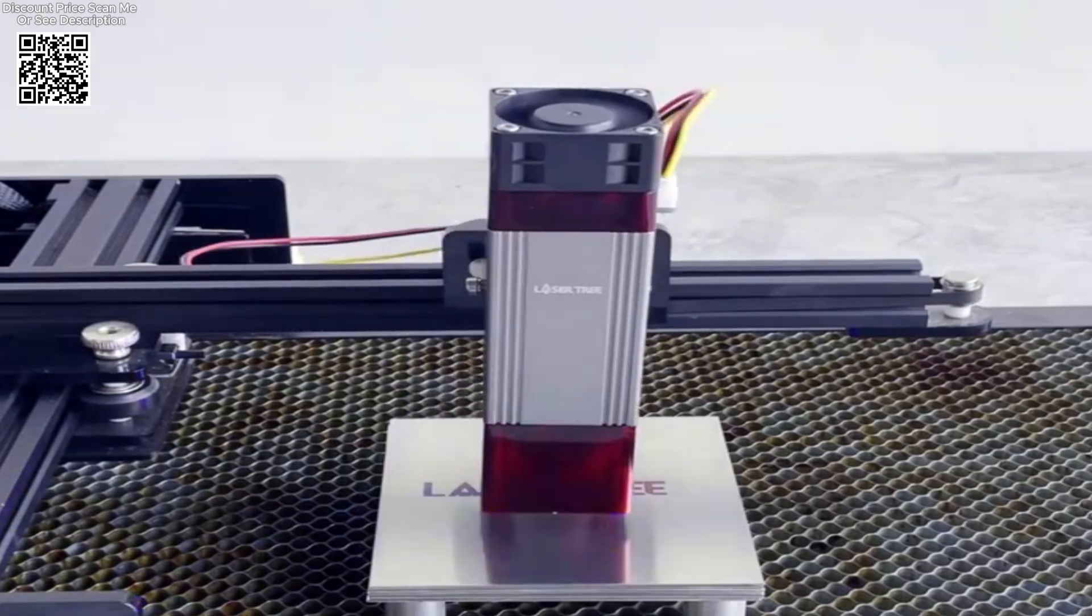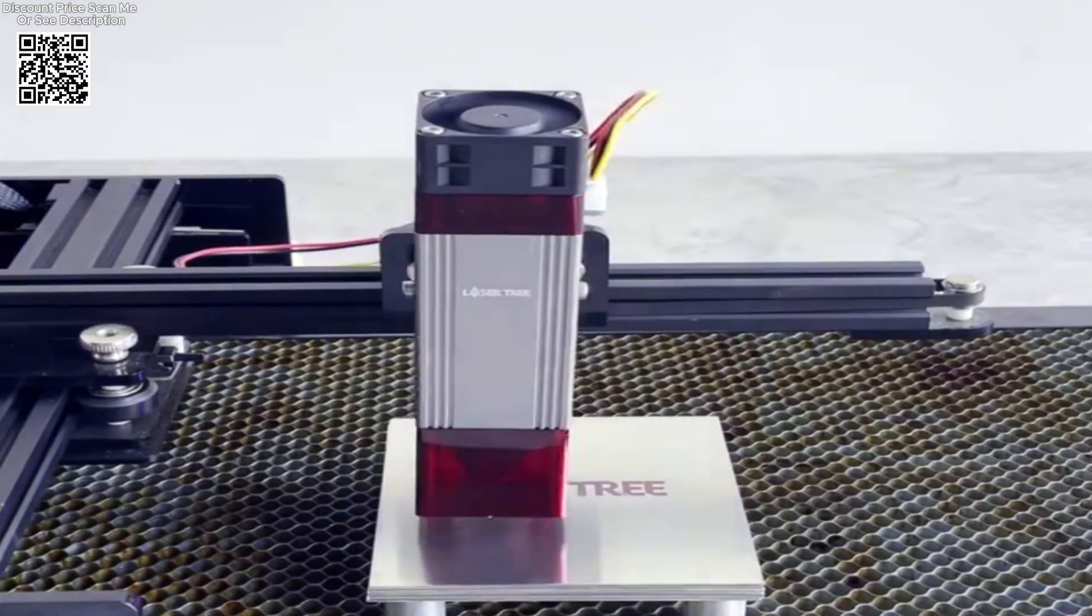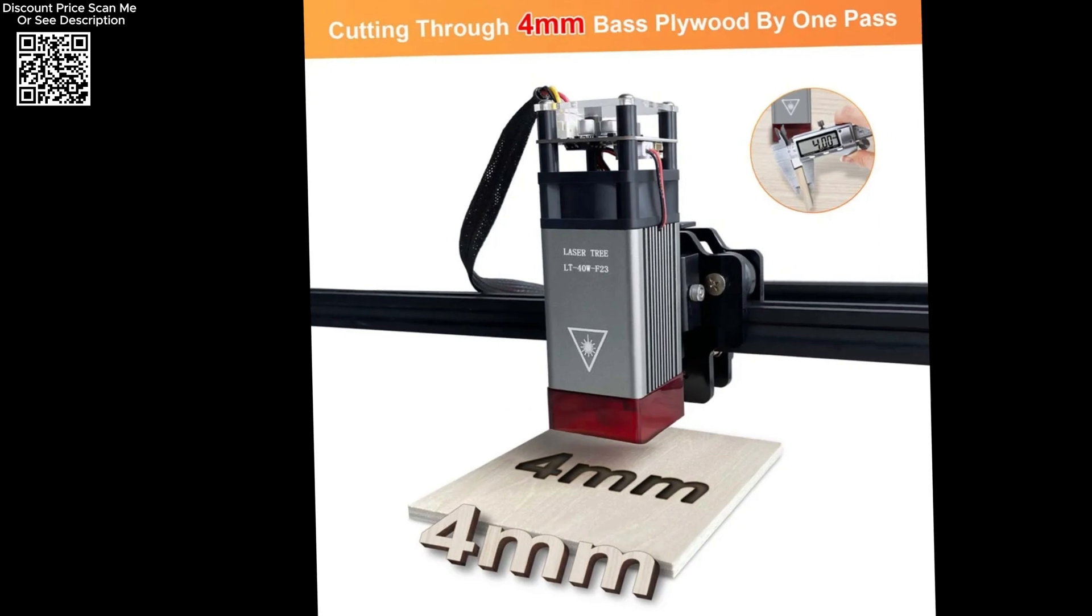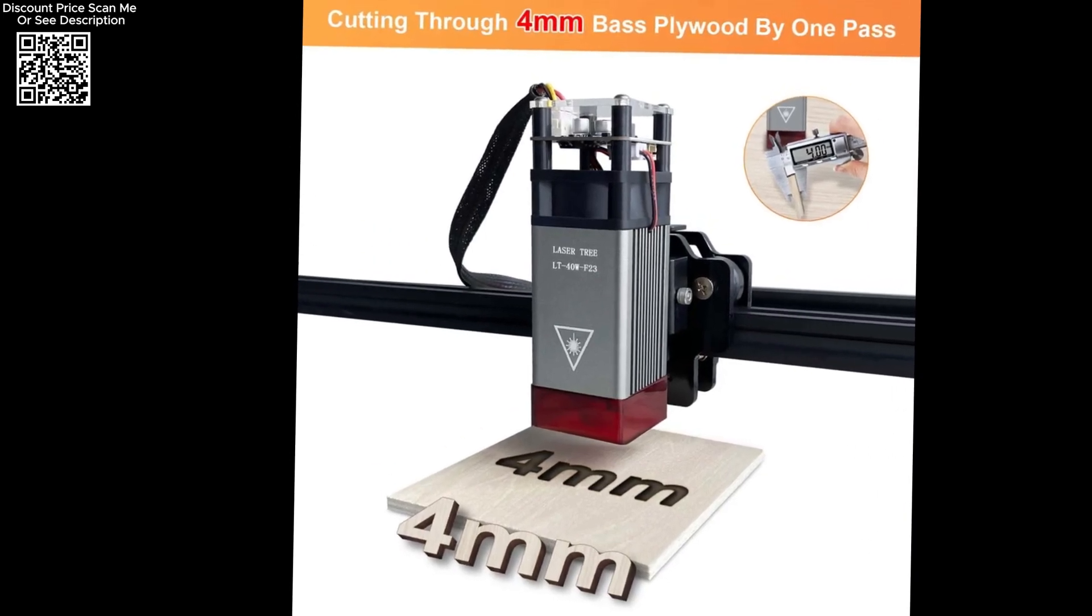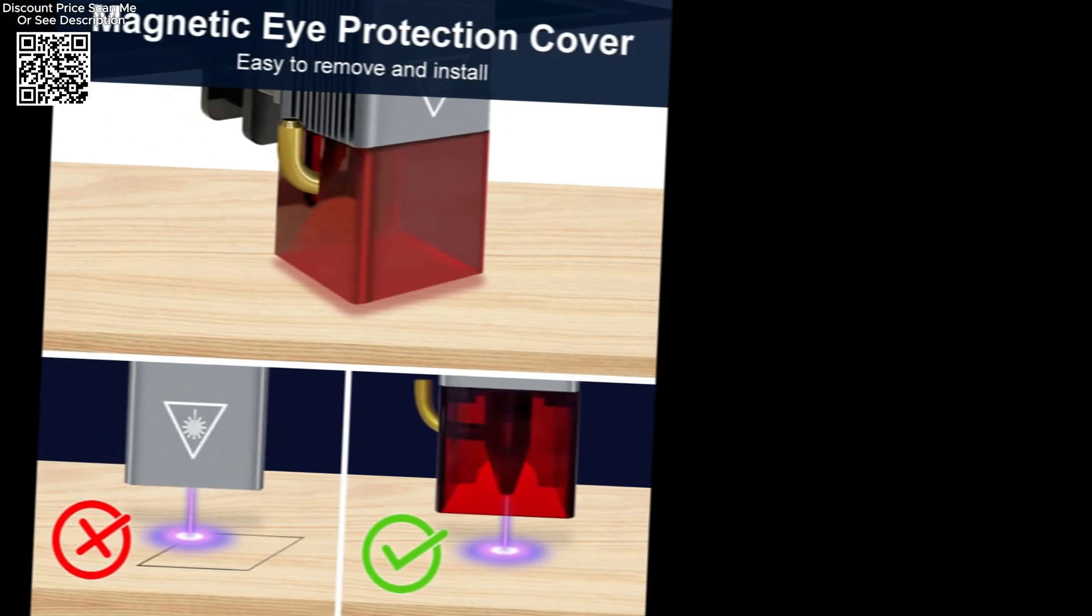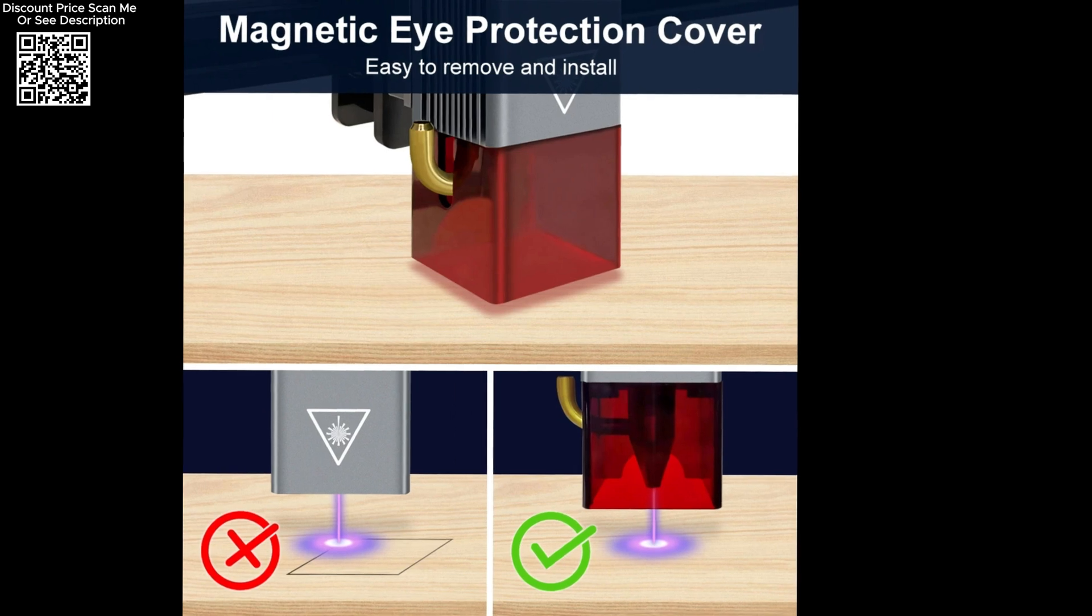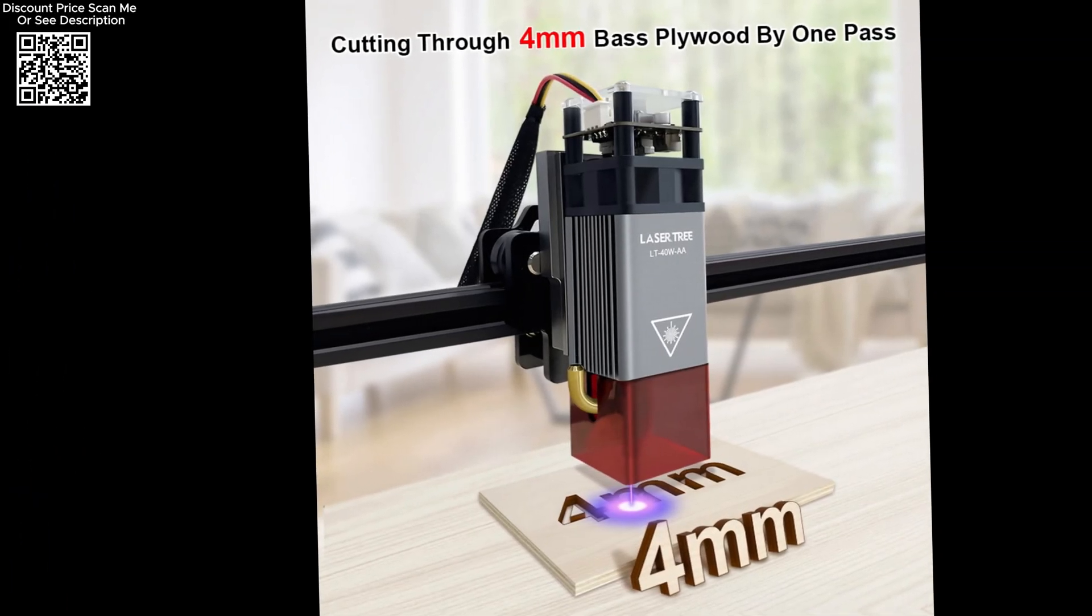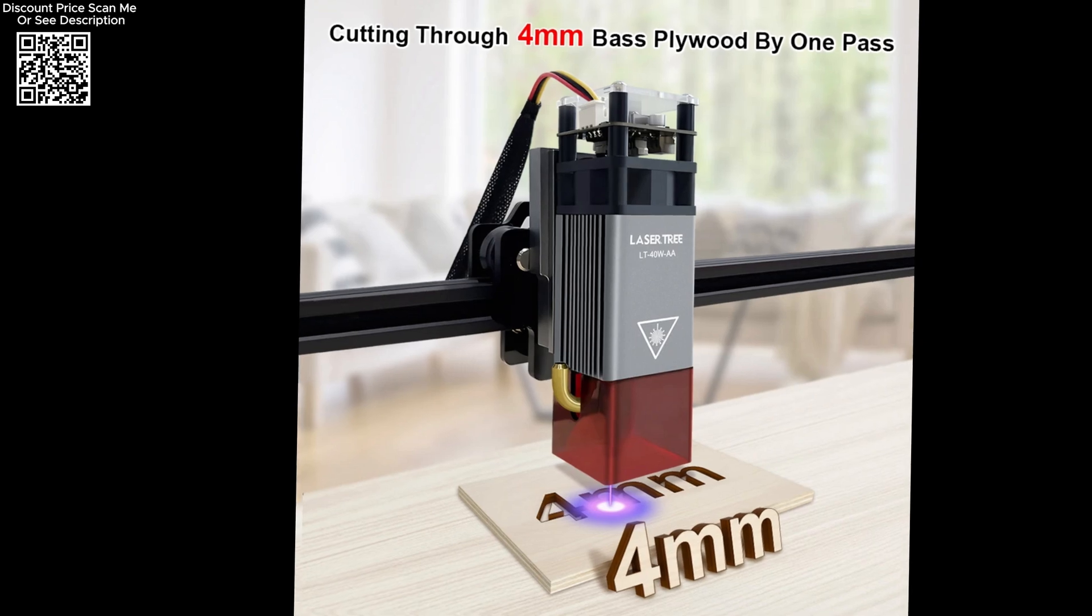Installation of the Lasertree module is straightforward, thanks to its user-friendly design. It comes with a magnetic protective cover and a 3-pin, 80cm cable, simplifying the setup process and making it accessible for users of all skill levels. This easy installation ensures that users can quickly begin utilizing the module's advanced features.